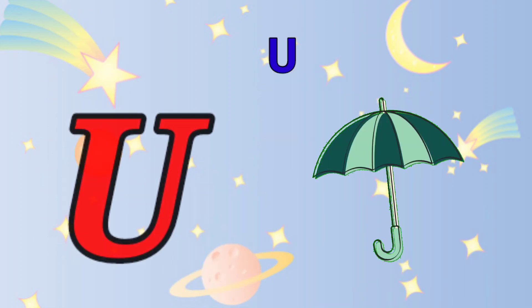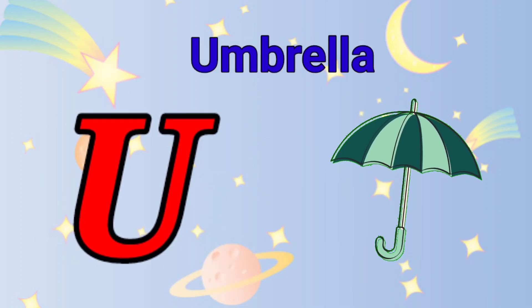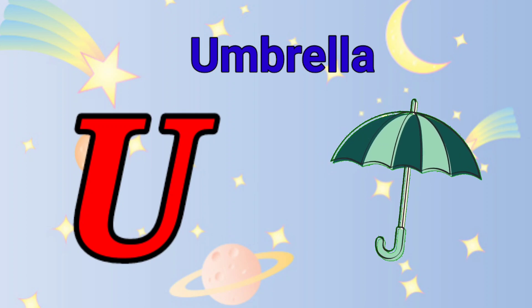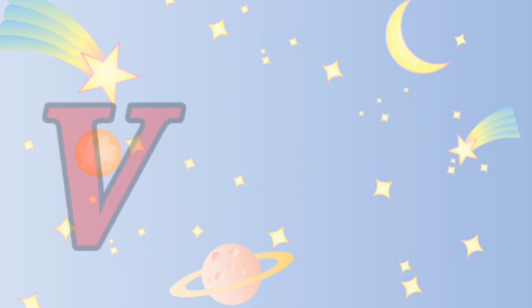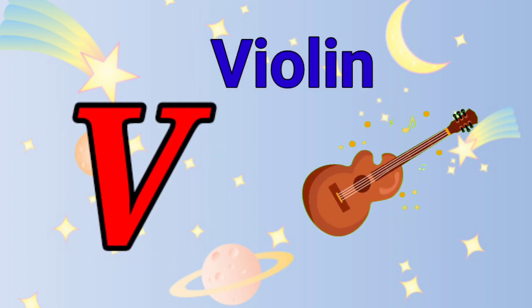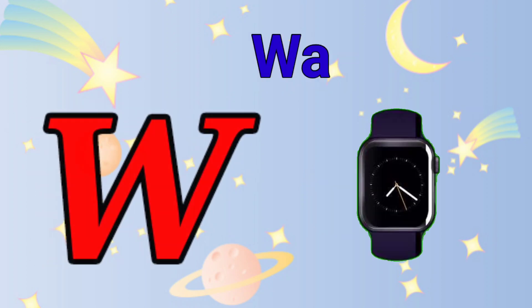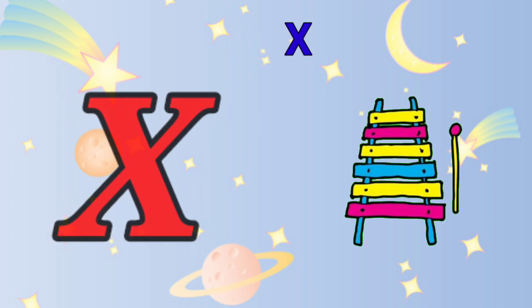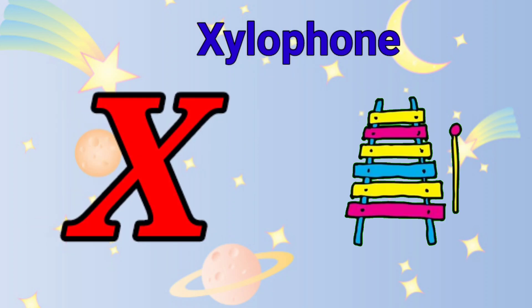U is for umbrella, u-u-umbrella. V is for violin, v-v-violin. W is for watch, w-w-watch. X is for xylophone, z-z-z-xylophone.